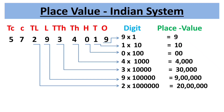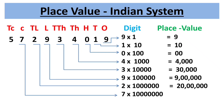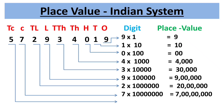The fourth period is crores, consisting of two place values: crores and ten-crores. Place value of 7 is 7 × 1,00,00,000 = 7 crores. Place value of 5 is 5 × 10,00,00,000 = 50 crores.